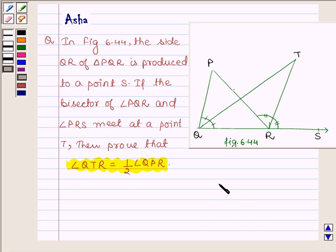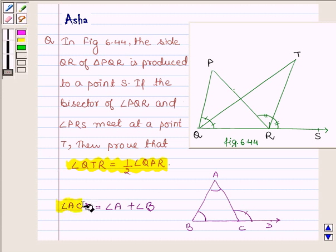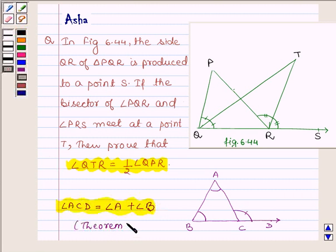So first let us learn that if we have a triangle, suppose we have a triangle ABC, then if a side of the triangle is produced to a point D, suppose BC is produced to a point D, then the exterior angle so formed is equal to the sum of two interior opposite angles. That is, angle ACD is equal to the sum of angles A and B, which is theorem 6.8 of your book.